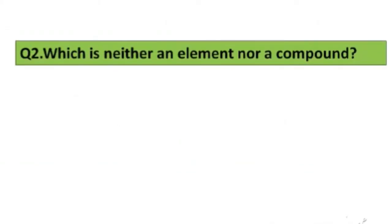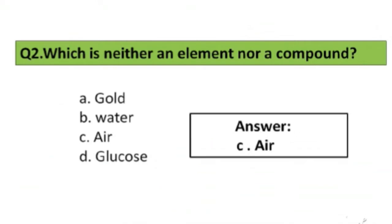Question number 2. Which is neither an element nor a compound? Options: A. Gold, B. Water, C. Air, D. Glucose. The right answer is option C, Air.